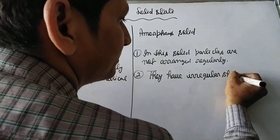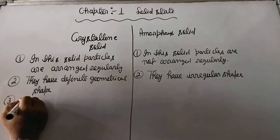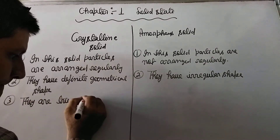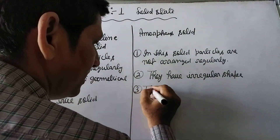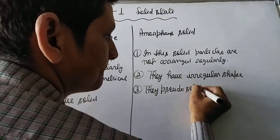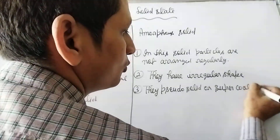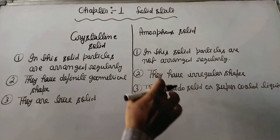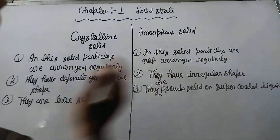Property 3: In crystalline solid, they are true solids. In amorphous solid, they are pseudo solids, or supercooled liquids.